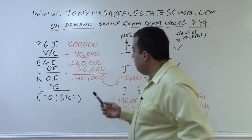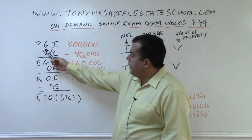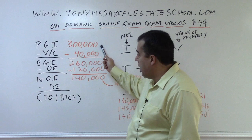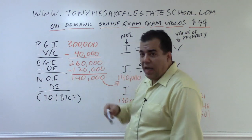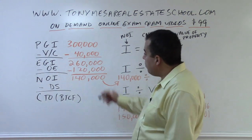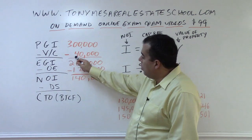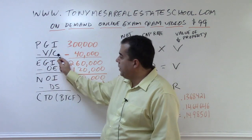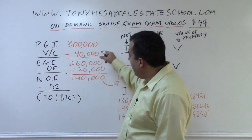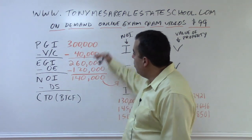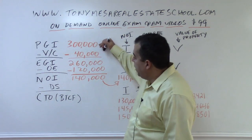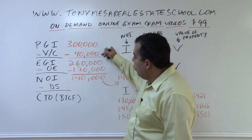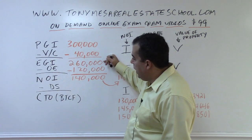We have an income-producing property. The potential gross income — how much it would make per year if all the units were rented out all the time — is $300,000. The vacancy and collection losses, the losses because some units are vacant or we were unable to collect rent, is $40,000. So $300,000 potential gross income minus $40,000 vacancy and collection loss gives us $260,000.